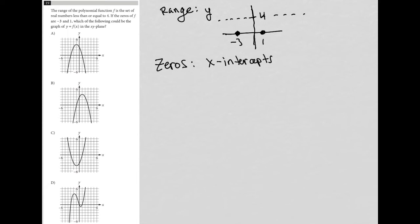If it goes above 4, it can't be correct, right, because it has to exist below 4. And if it doesn't go through the x-axis at negative 3 and positive 1, it also can't be correct. So let's try out answer choice A.